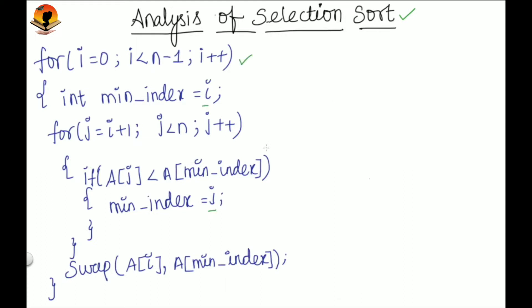As we discussed in the introduction part of DAA, priori analysis has an assumption that every statement takes one unit of time for each execution, and every variable takes one unit of memory. So to find the time complexity of any program, our main goal should be finding the time unit for each statement.